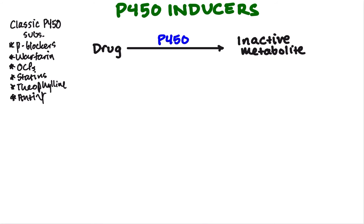There is a difference between an inducer and an inhibitor. An inducer of the P450 enzymes revs up the system. If we induce one or multiple P450 enzymes, whatever drug is being metabolized by that enzyme will have its levels drop faster than normally expected. There are a lot of different P450 enzymes — you'll hear them referred to as CYP2D6 or CYP3A4 — all cytochrome P450 enzymes.